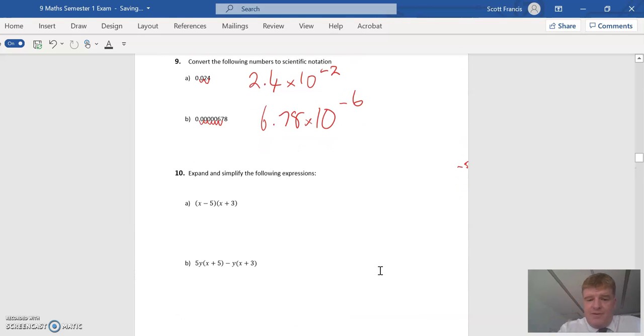We've got to expand and simplify. So x times x. We can do the first ones, the outside, then the inside, then the last of each pair. The first ones are x times x, which is x squared. x times 3, which is 3x. Minus 5 times x is minus 5x. Minus 5 times 3 is minus 15. Now we can put together our x's. Plus 3x minus 5x is going to be minus 2x. x squared minus 2x minus 15.